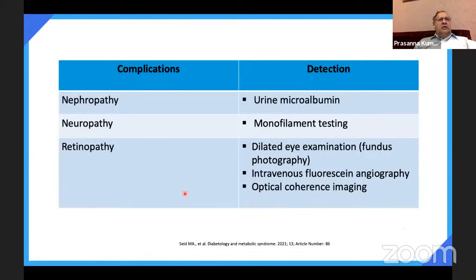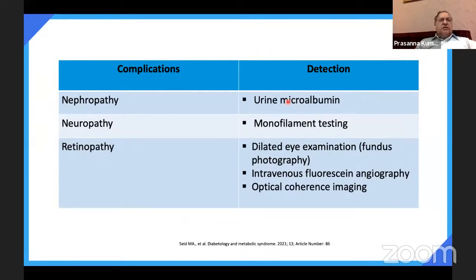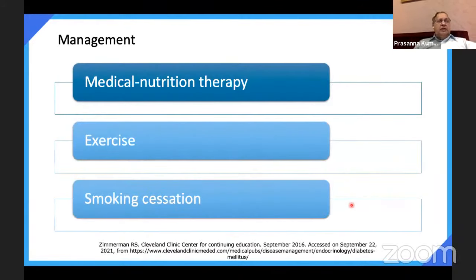The three common microvascular complications and how to detect them: For nephropathy, earliest detection is using urine sticks — if positive, that is macroproteinuria. Microalbuminuria (30 to 300 mg) can be detected by specific strips using 24-hour urine collection or even a spot sample. For neuropathy, monofilament testing — if pressure sensation is reduced, that indicates neuropathy. For retinopathy, dilated eye examination by fundus photography; optical coherence imaging can also be done. Artificial intelligence using a non-mydriatic camera can screen all patients in the clinic.